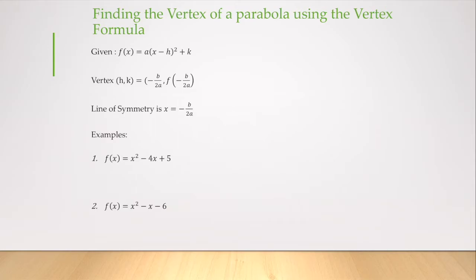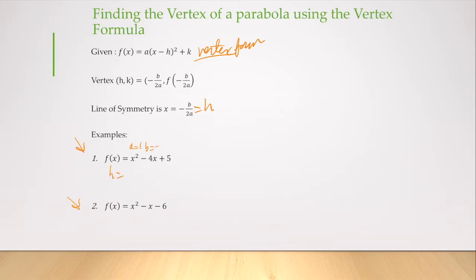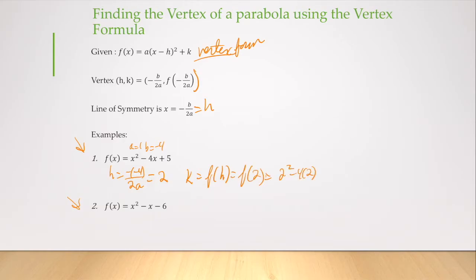We're going to find the vertex of a parabola using the vertex formula. When parabolas aren't written in vertex form, we can solve for our vertex knowing that the line of symmetry is h. For f of x equals x squared minus 4x plus 5: a is 1, b is negative 4, so h equals negative b over 2a, giving h equals 2. Then k equals f of h, which is f of 2: 2 squared minus 4 times 2 plus 5 equals 4 minus 8 plus 5, which is 1. So the vertex is at x equals 2, y equals 1.